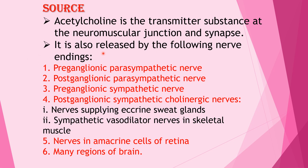Acetylcholine is also released by the following nerve endings: preganglionic parasympathetic nerve, postganglionic parasympathetic nerve, preganglionic sympathetic nerve, postganglionic sympathetic cholinergic nerves, nerves supplying eccrine sweat glands, sympathetic vasodilator nerves in skeletal muscle, nerves in the amacrine cells of the retina, and many regions of the brain.